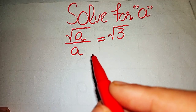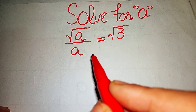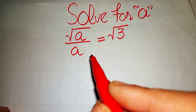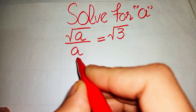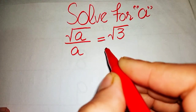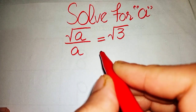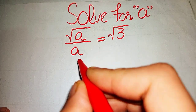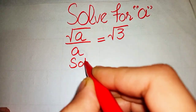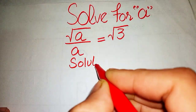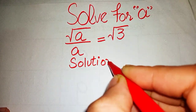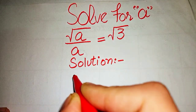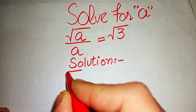Hi guys, welcome to my channel. Today we're solving this nice math olympiad algebraic equation: square root of a over a equals square root of 3. Let's start our solution.